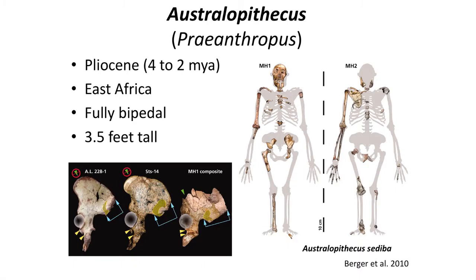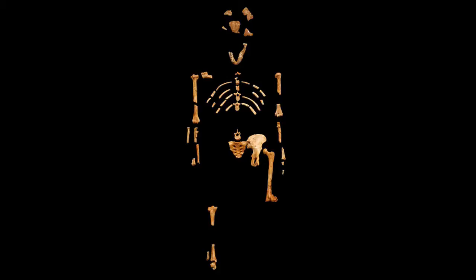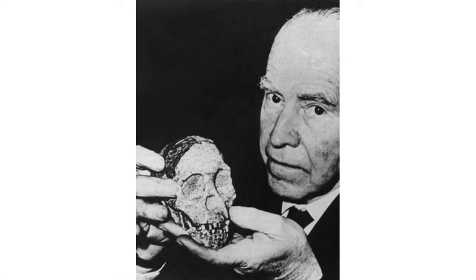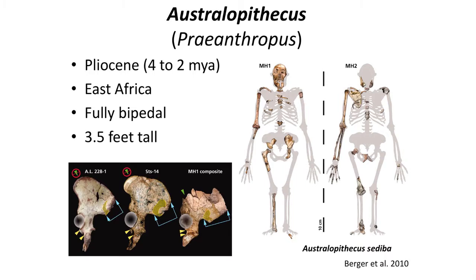Australopithecus, unlike other apes, was bipedal and could move between forests in the open savannah if needed. The most famous specimen is Lucy, discovered in 1974. Another equally famous specimen is the Taung Baby, a juvenile skull described by Raymond Dart in South Africa. Numerous specimens, particularly in South Africa and Ethiopia, have been found in the last few decades, slowly filling in the once poor fossil record of this period.